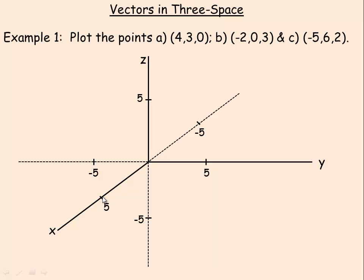This is the origin. The x axis looks like it comes out of the screen or out of the page towards you. The y axis goes towards the right and the z axis up. So the 4 means you go 4 in the direction of the positive x axis, and then the 3 means from there you go 3 in the direction of the positive y axis. The 0 means you don't go up or down in the z direction at all. So that point actually lies in what's called the xy plane, because the z coordinate is zero. That would be the point (4, 3, 0).